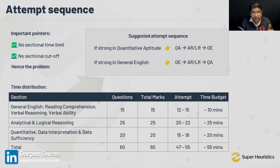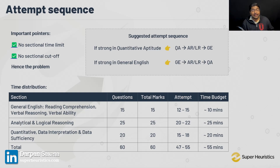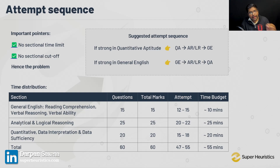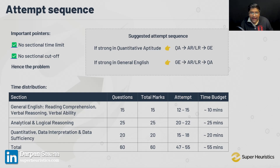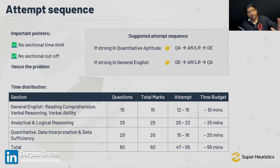From there, in AR and LR, give yourself 25 minutes. That is what will help you. Give yourself 25 minutes and try to attempt 20 to 22 questions in AR and LR. You can do it. Then give 20 odd minutes to QA and try to score something around 15 to 18 attempts in that. At the end of it, you would have planned for 55 minutes. Your aim should always be to give yourself 5 minutes spare — plan for only 55.